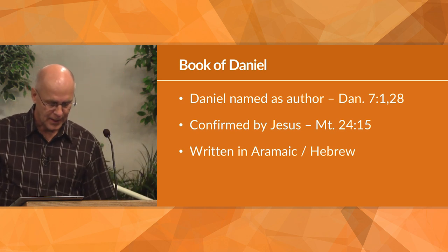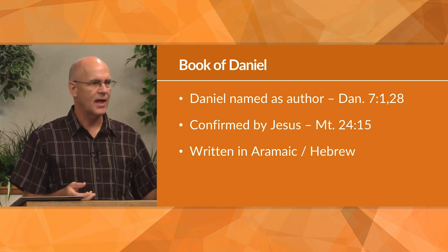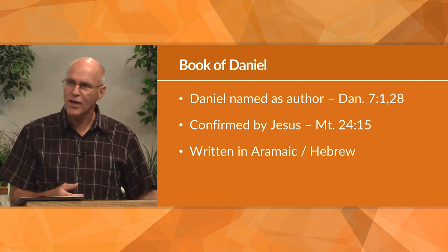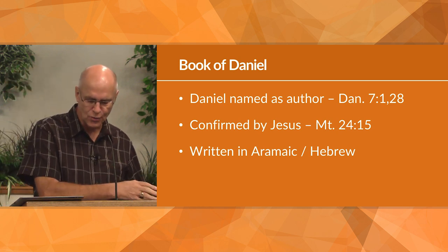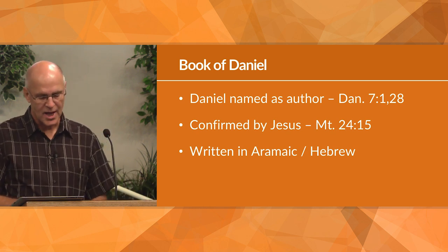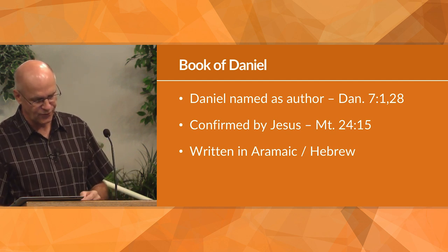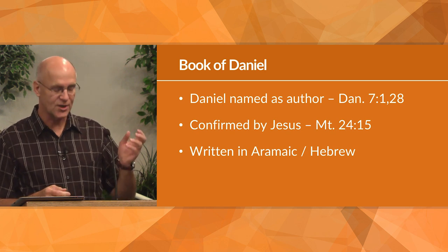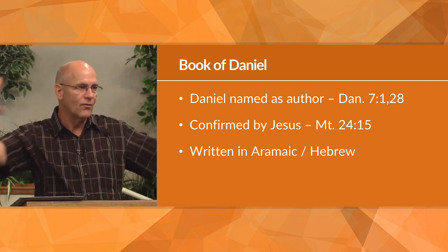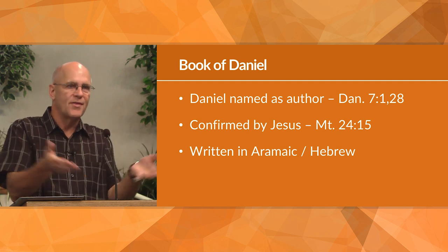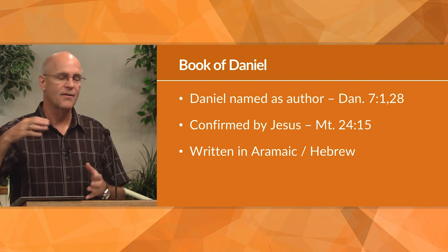The book was written in two languages — Chaldean or Aramaic, which was the diplomatic language of that era, just as French was once the diplomatic language and English is today. Chapters two through seven are in Aramaic; the rest is in Hebrew. This is expected from a book written for Jews living in Babylon, containing information about their actual experience there and references to their Jewish past and future.